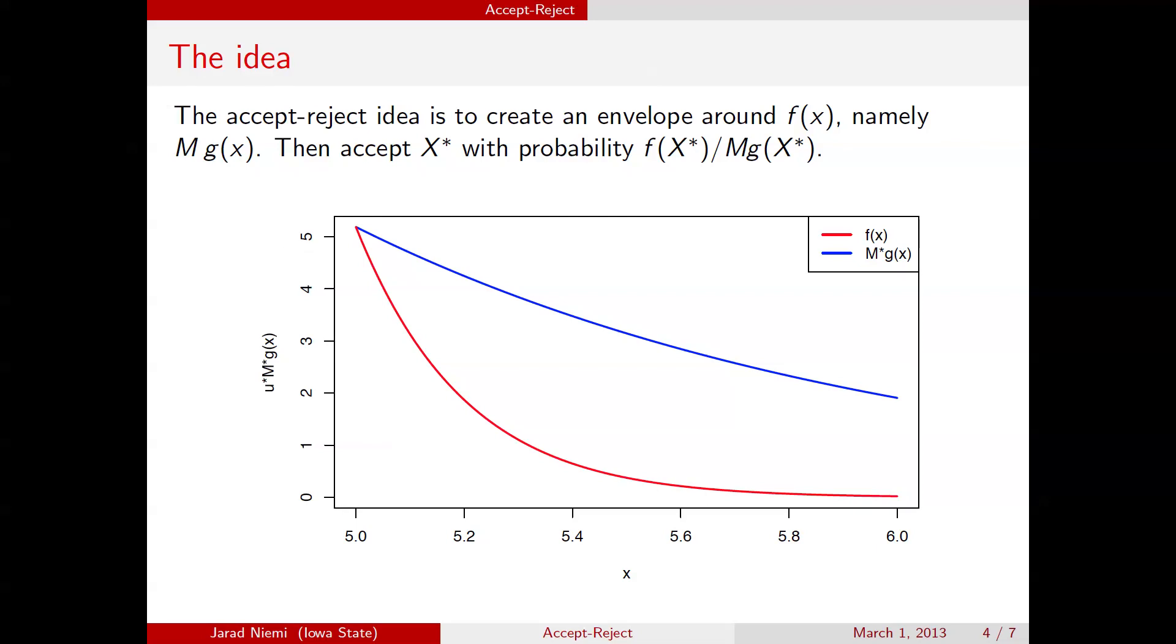That's going to be somewhere along the x-axis. And we're going to draw a random uniform on 0, 1. And we're going to plot that on the y-axis, but we're going to scale it times m times g of x.